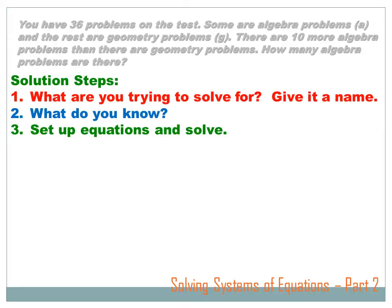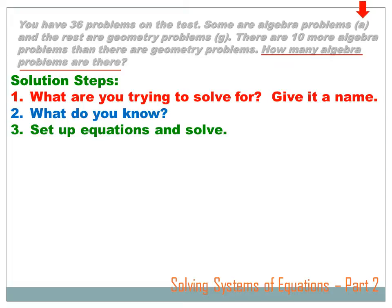The first step is to figure out what you're trying to solve for and give it a name. That's part of the CCC process — you want to underline the question: how many algebra problems are there? We gave it the name A. The second step is to ask yourself, what do you know? We know that there are a total of 36 problems on the test, and we know that there are 10 more algebra problems than there are geometry problems.